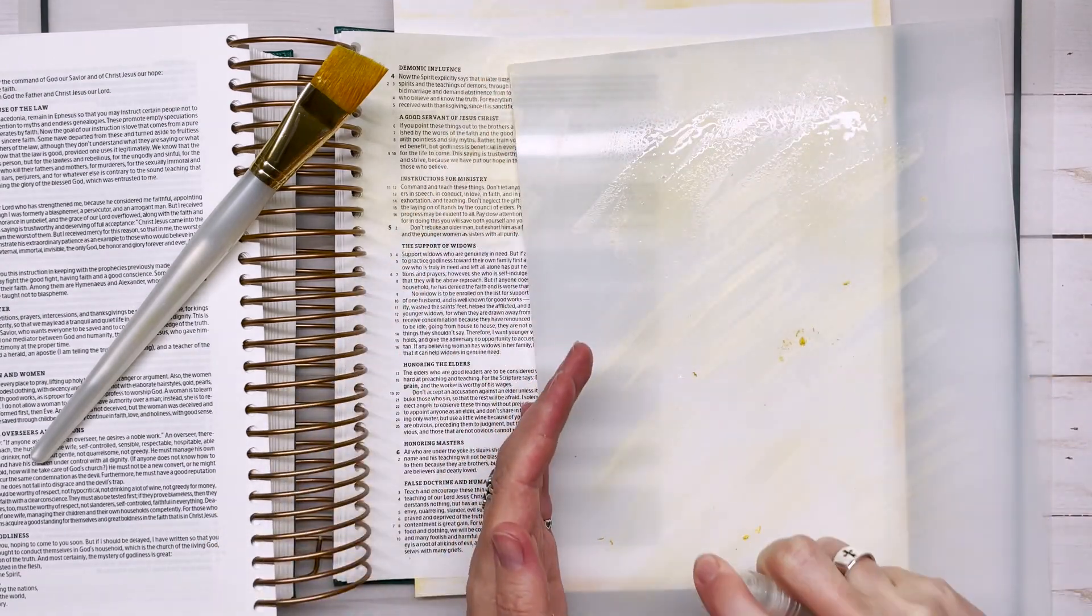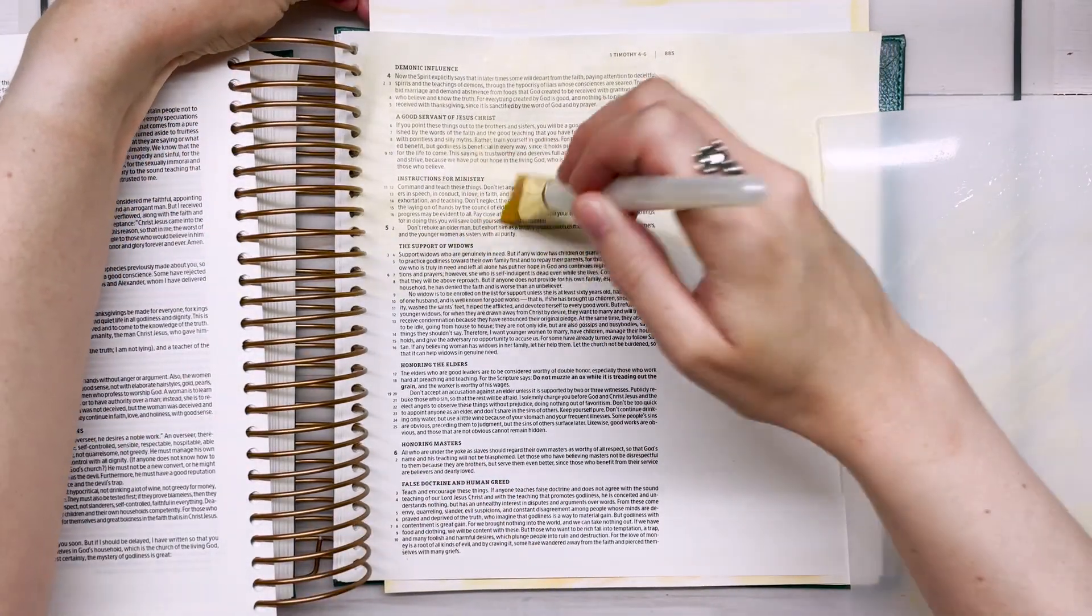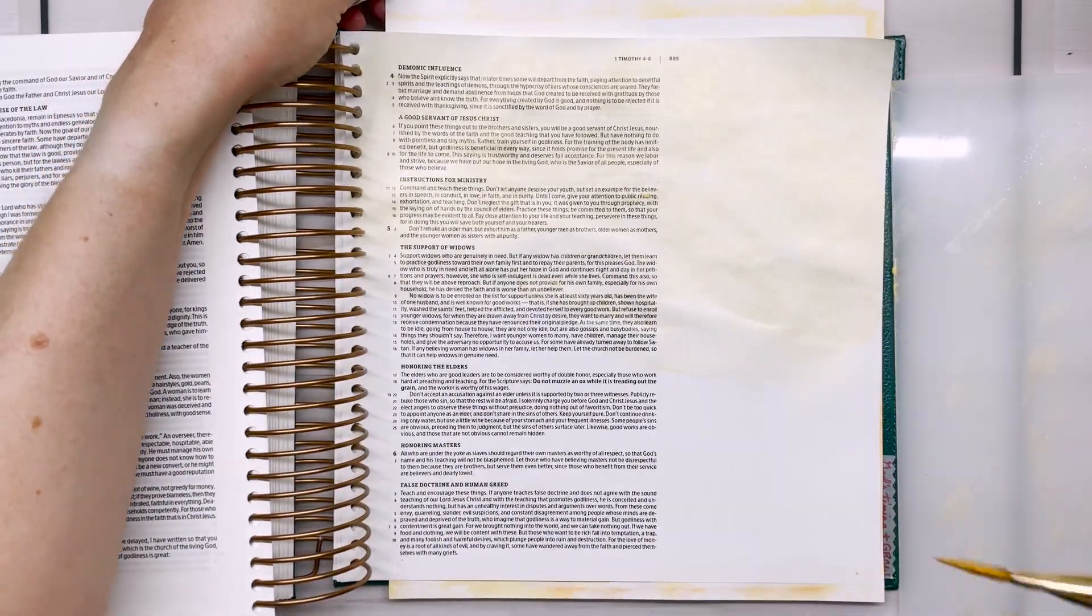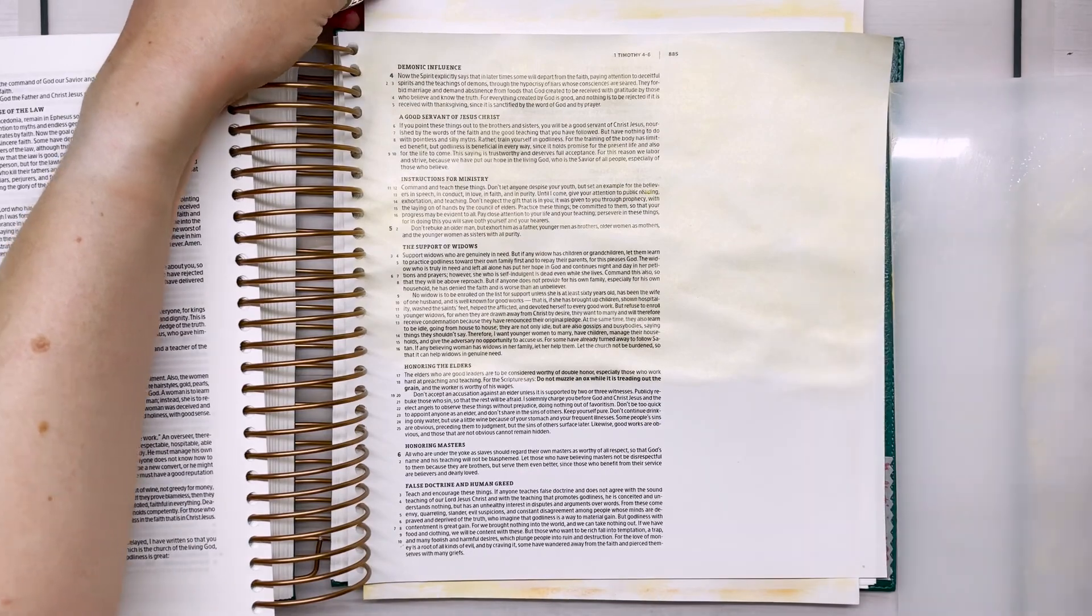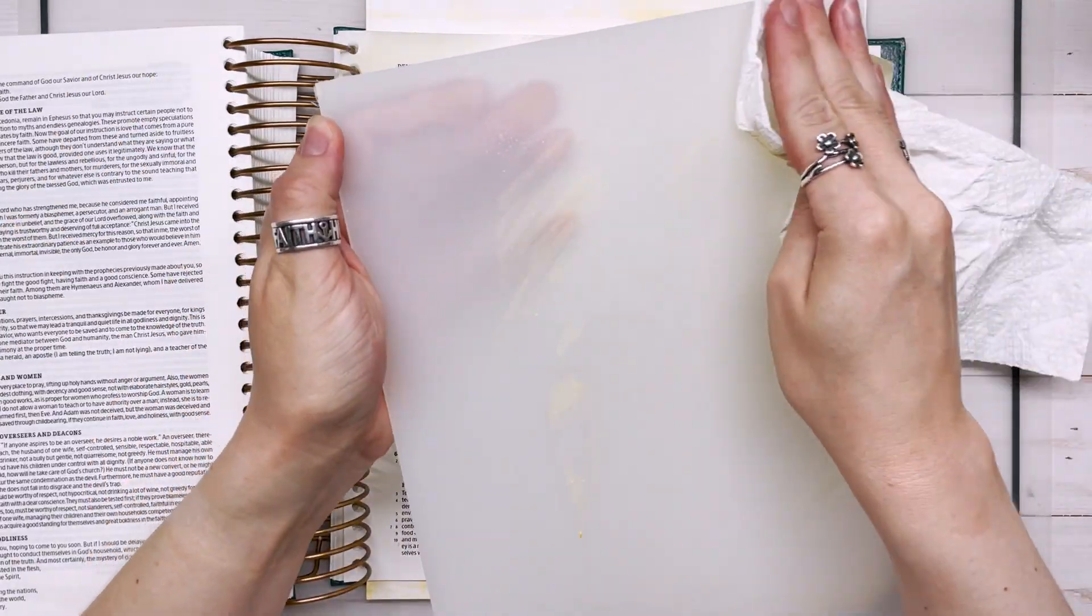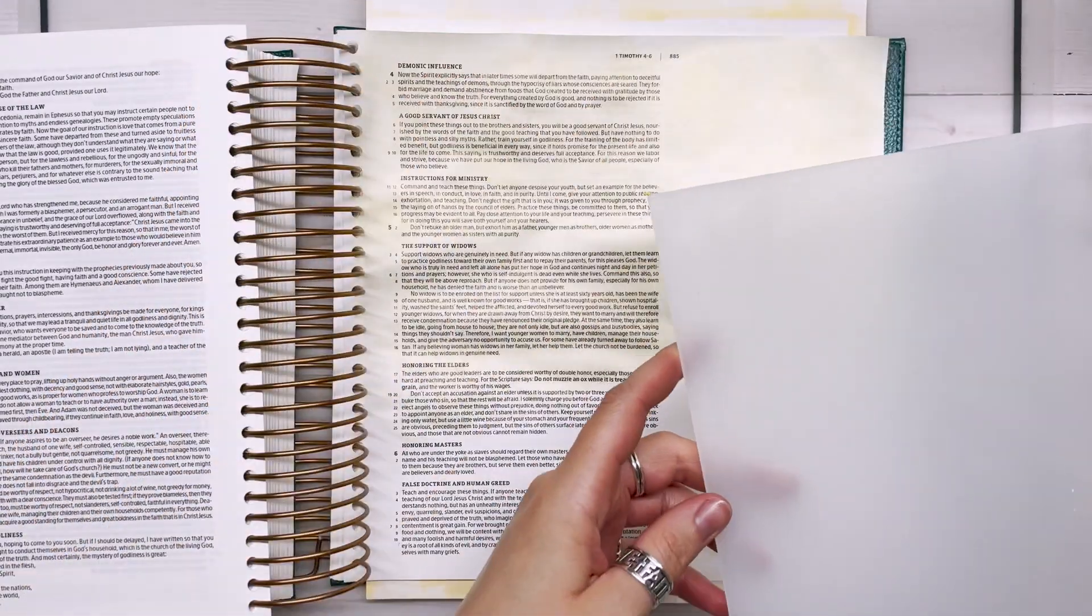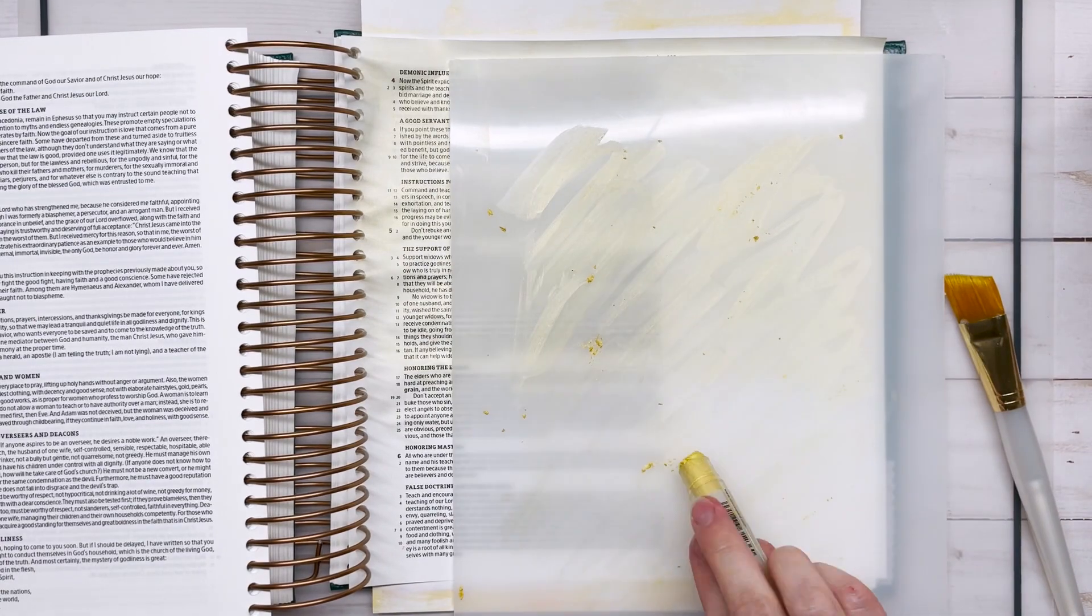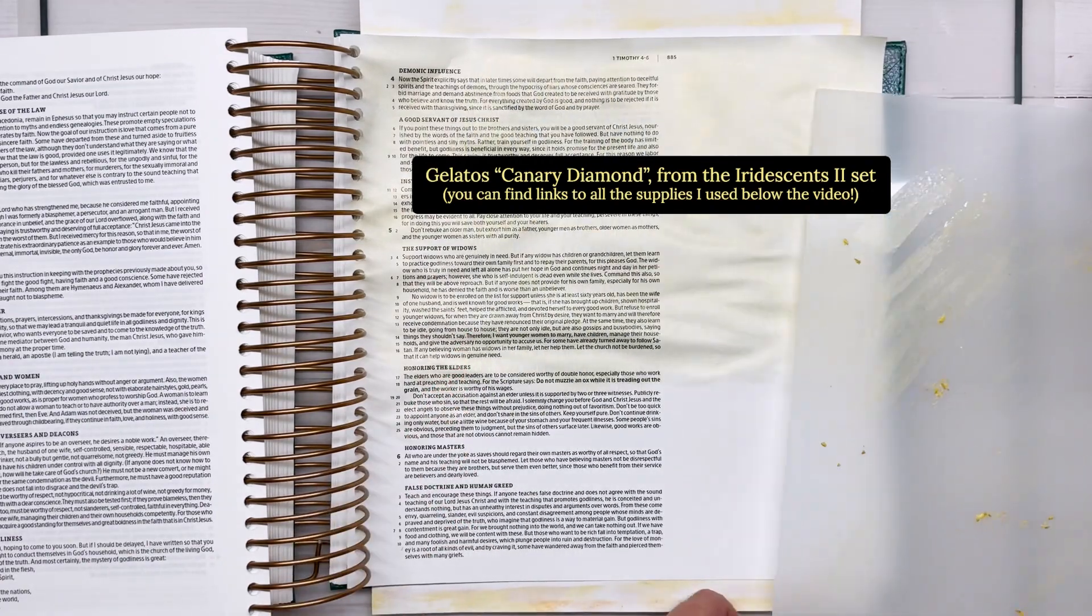One of the things that I really like about the gelatos is that they're so transparent, it still adds a lot of color, even if I were using a darker color. So you can use the darkest gelatos color there are, and that still won't obscure the text on the Bible page. So that's always a plus with the gelatos. You can see every time I'm just starting over with a dry palette before I put more of the gelatos down. So you can always add more than one color if you like. I'm just using the one color, which by the way is the canary diamond color from the iridescence two set.